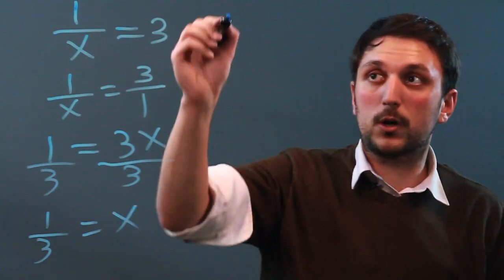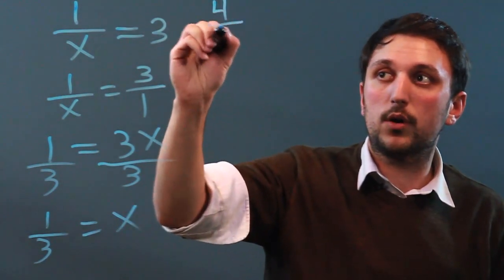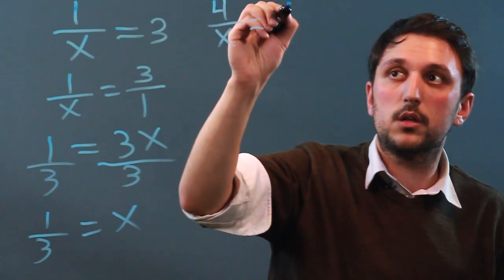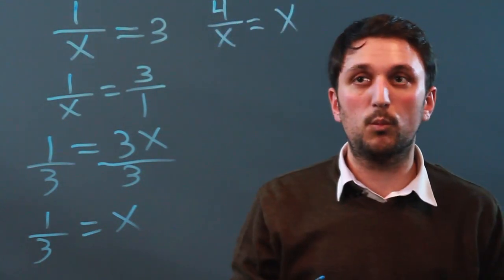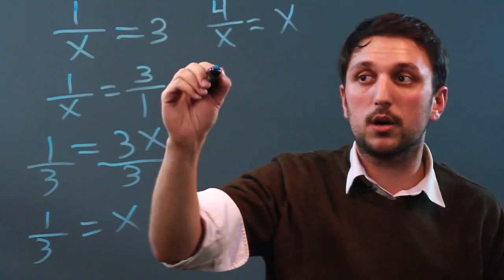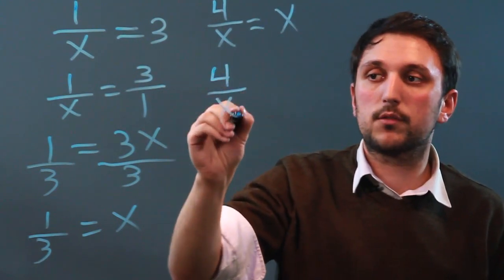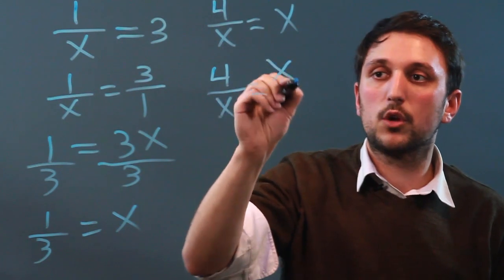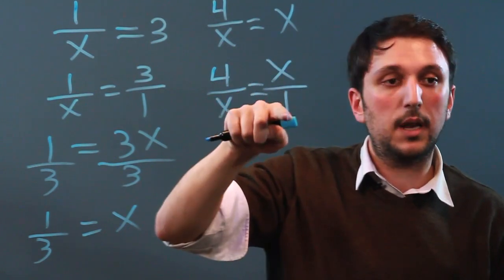Now, we can make it a little more complicated by saying 4 over x equals x. Well, the same thing holds. If we have something in the denominator here, we have to make a denominator here. So, 4 over x equals x over 1, because x divided by 1 is x.